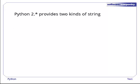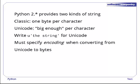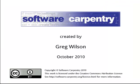What you do have to know is that Python 2.x provides two kinds of strings. A classic string uses one byte per character, just as it always did, while a Unicode string uses enough memory per character to store any kind of text. Unicode strings are indicated by putting a lowercase 'u' in front of the opening quote. If we want to convert a Unicode string to a string of bytes, we must specify an encoding. You should always use UTF-8 unless you have a very, very good reason to do something else — and even then, you should think twice.